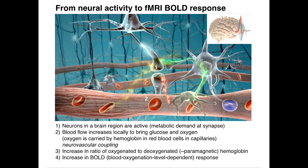How do we pass from neural activity to fMRI BOLD response? Neurons in a brain region are active and metabolic demand at the synapse is present. Second, blood flow increases locally to bring glucose and oxygen. Third, there is an increase in the ratio of oxygenated to deoxygenated paramagnetic hemoglobin. And fourth, there is an increase in blood oxygenation level dependent response.